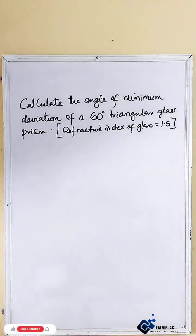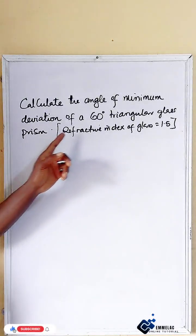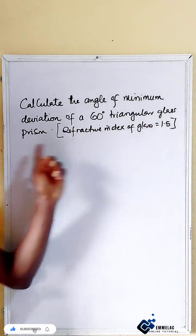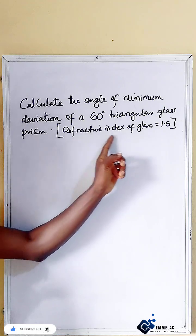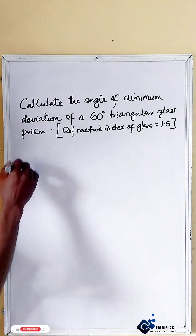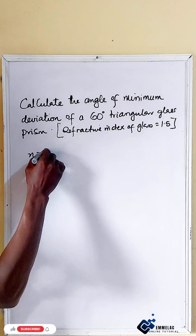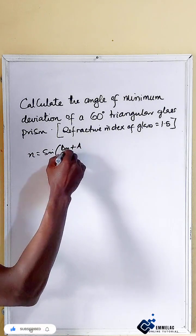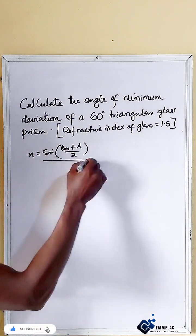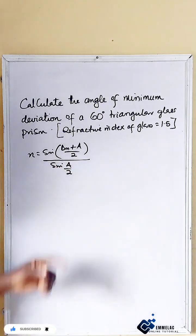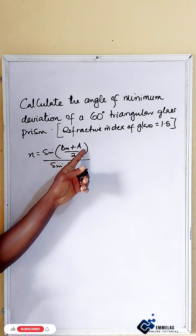Now let us solve this question. We are asked to calculate the minimum deviation of a 60-degree triangular glass prism. We are given that the refractive index of glass is 1.5. Now let us recall that n equals sine of (dm plus a) all over 2, divided by sine of a over 2, where dm is the minimum deviation and a is the refractive angle of the glass.